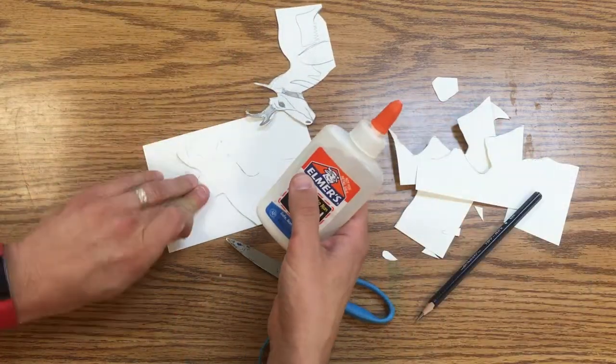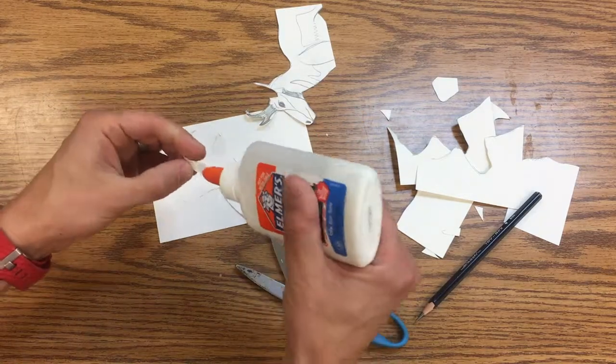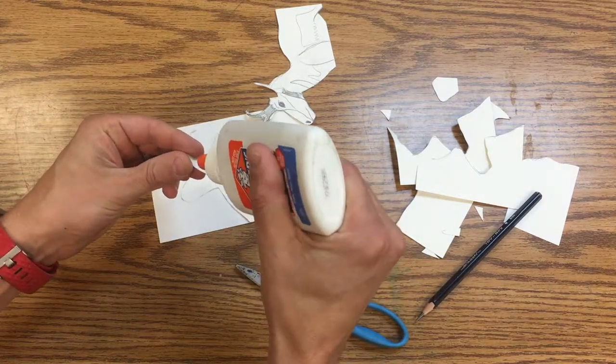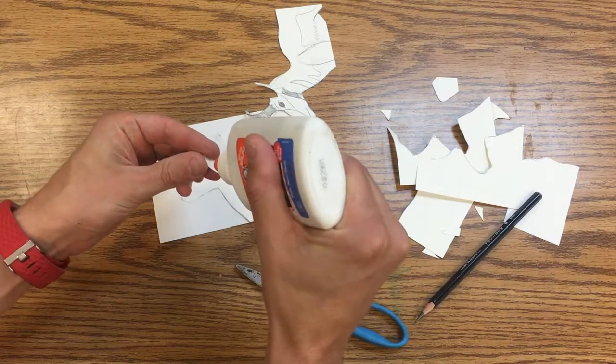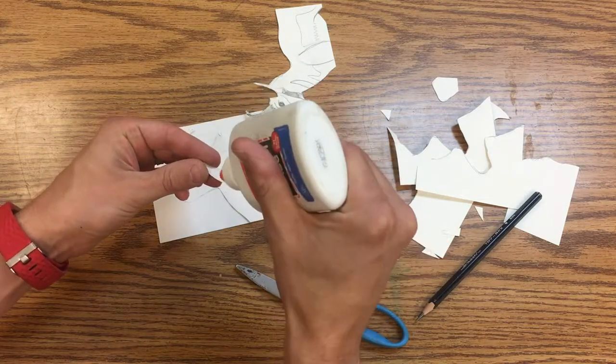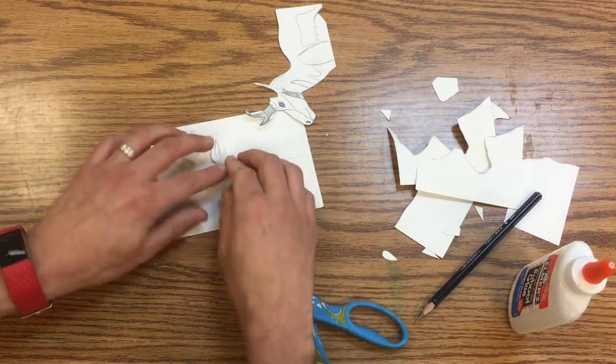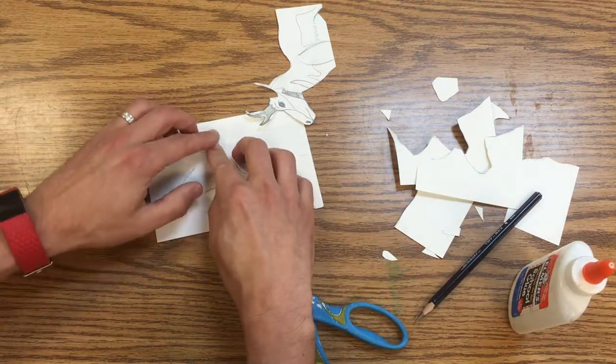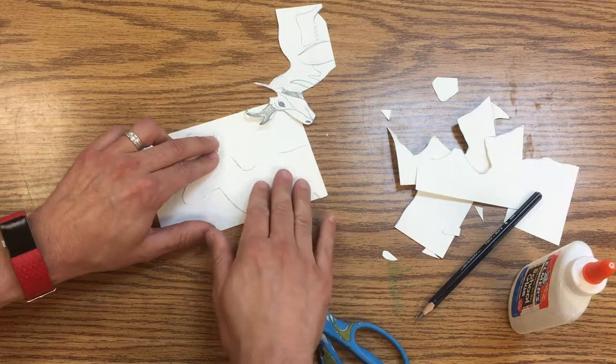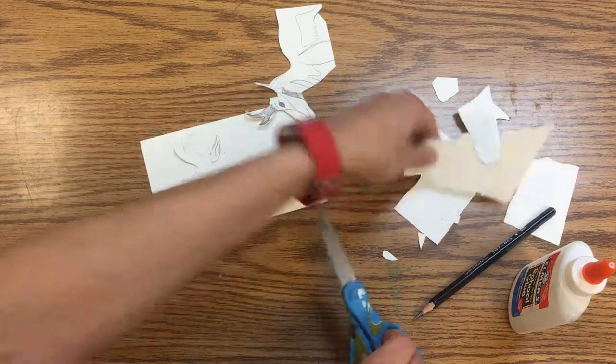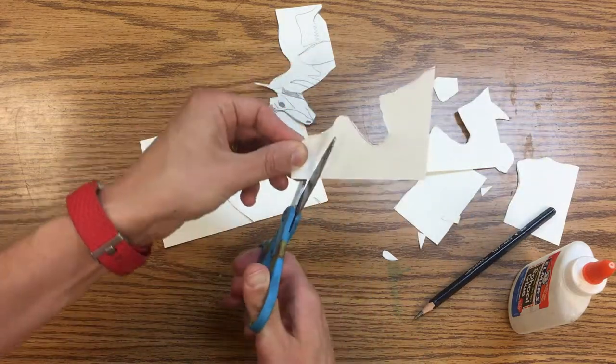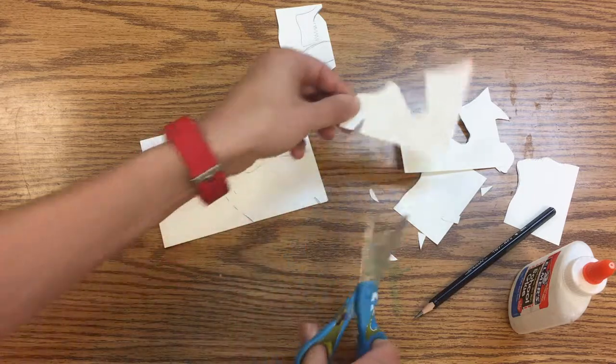So I'm going to put some glue on the back of the ear, put that there, and I could probably make a little piece for the inner ear so that pops up too.